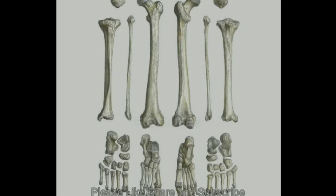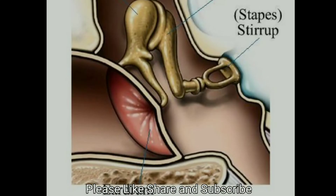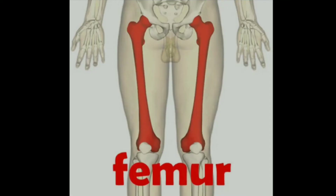Did you know? There are three bones in each of the ears. Of these, the stirrup is the smallest bone in our body — it is as small as a grain of rice, is hollow, and shaped like a stirrup. In the human body, the longest and strongest bone is the thigh bone, or the femur.